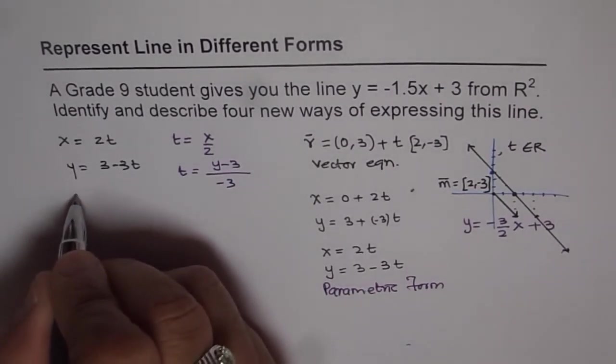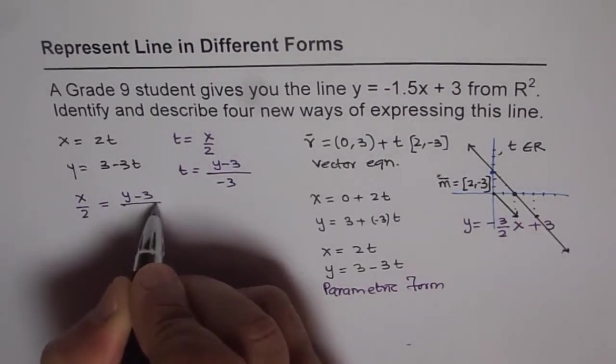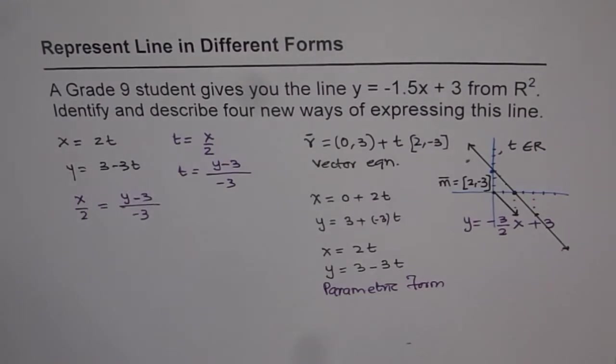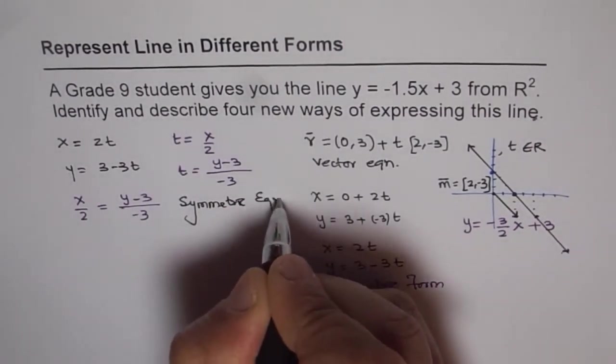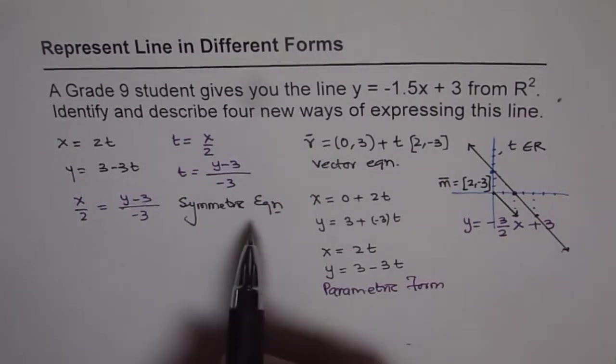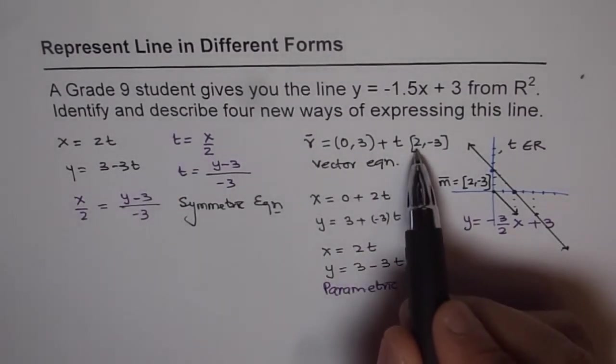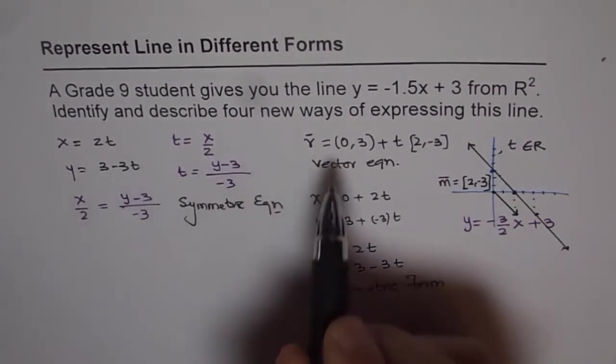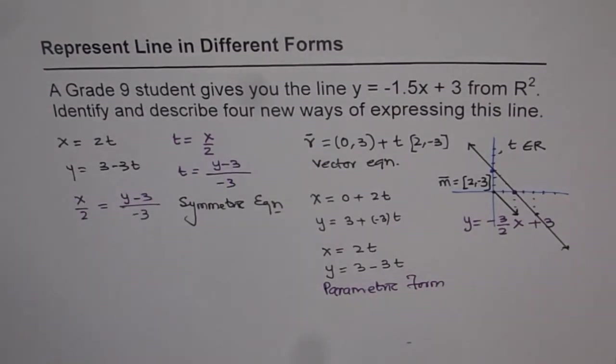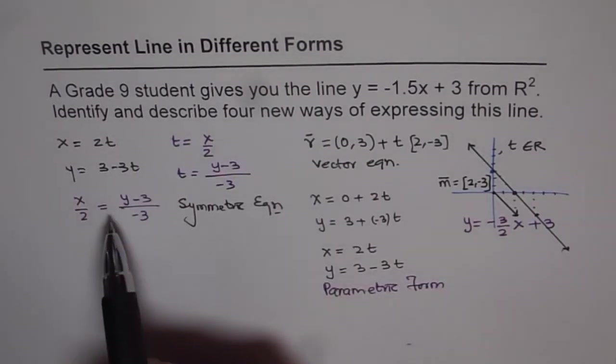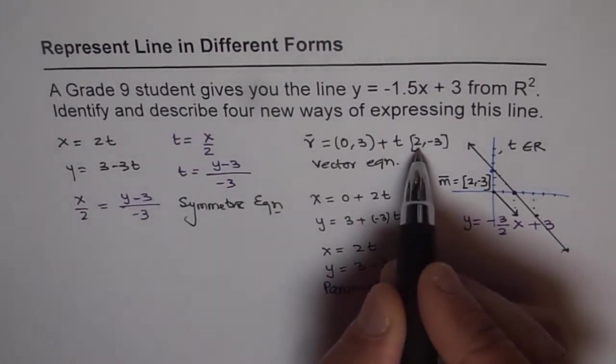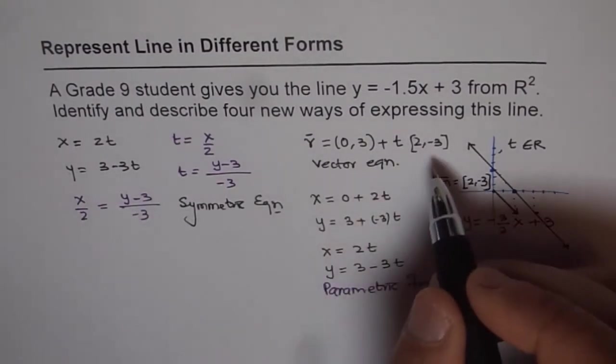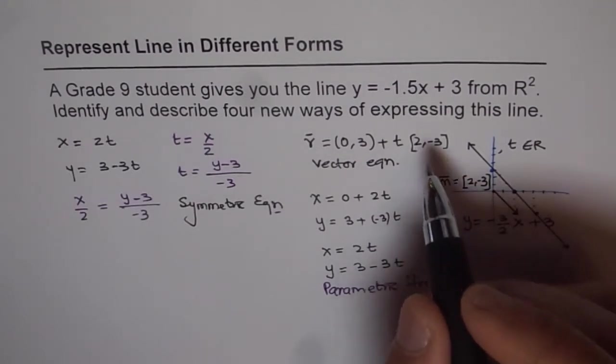Now, this parameter t should be same for a point. Therefore, I can write this in another form, which is x/2 equals (y - 3)/(-3). That brings us to the third form of representing the same line. This is called the symmetric form of equation. You will observe that denominator 2 and -3 represents your direction number 2 and -3. x - 0, y - 3. These values represent a point on the line. If I have to go directly to symmetric form, then I can always write this as (x - x₀)/direction number 1 and (y - y₀)/direction number for the y coordinate.